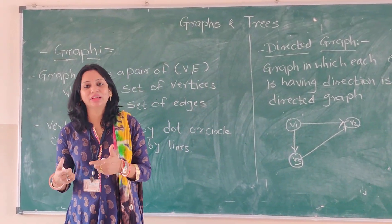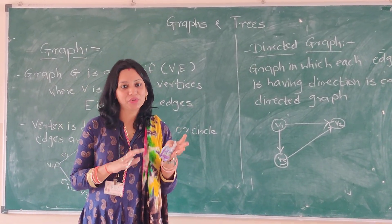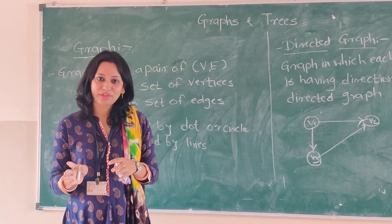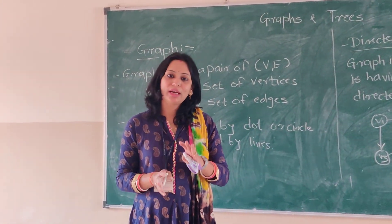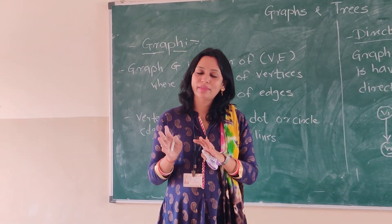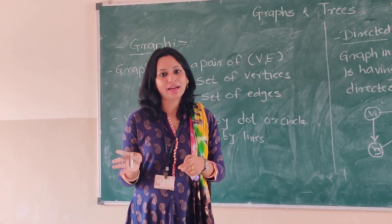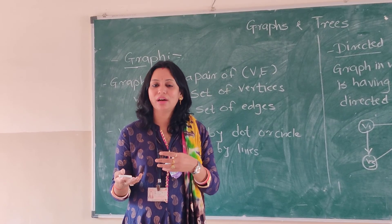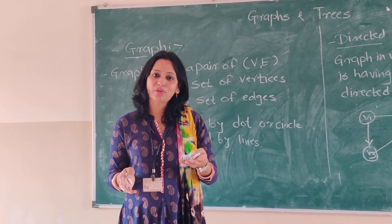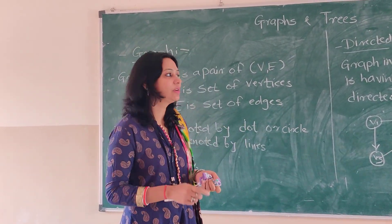We are starting with our unit that is basically dependent on graphs and trees. Trees are basically dependent on graphs, so first we will study what a graph is, so that it will be easy to understand what a tree is. Both are representations consisting of vertices and edges. We will first understand what a graph is, types of graph, operations of graph, and then we will start with trees.